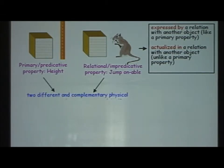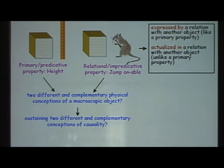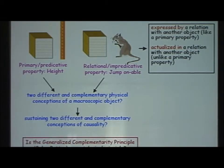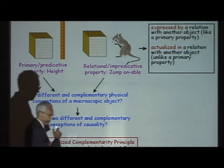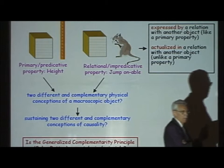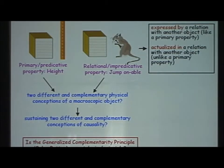Are there two different and complementary physical conceptions of a macroscopic object? A puzzle that has raged throughout the 20th century. Do they sustain two different and complementary conceptions of causality? An issue sustained through the 20th century but there's something new is the generalized complementarity principle advanced by Niels Bohr and certainly championed by Howard Pattee in the United States the theoretical physicist who's worked on the origin of life problem. Is this a generalized notion such that we should treat it as a matter of ontology not as Niels Bohr thought as a matter of epistemology?